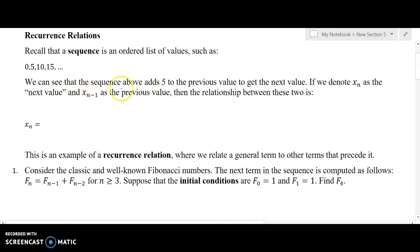We could probably figure out the pattern is that we're adding 5 to the previous value to get the next value. We're going to denote values in the sequence by a variable name and a subscript that denotes what term in that sequence we're talking about. So for example, here we can see that x0 is 0, x1 is 5, x2 is 10, and x3 is 15.